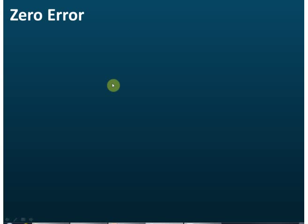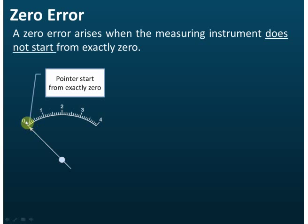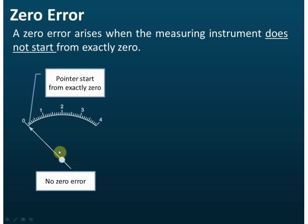We already discussed zero error. Now I'm going to discuss in detail what you need to know about zero error in SPM. Zero error arises when the measuring instrument does not start from exactly zero. For example, with an ammeter — if there is no current flowing through it, the pointer should start from exactly zero. If that is the case, there is no zero error.